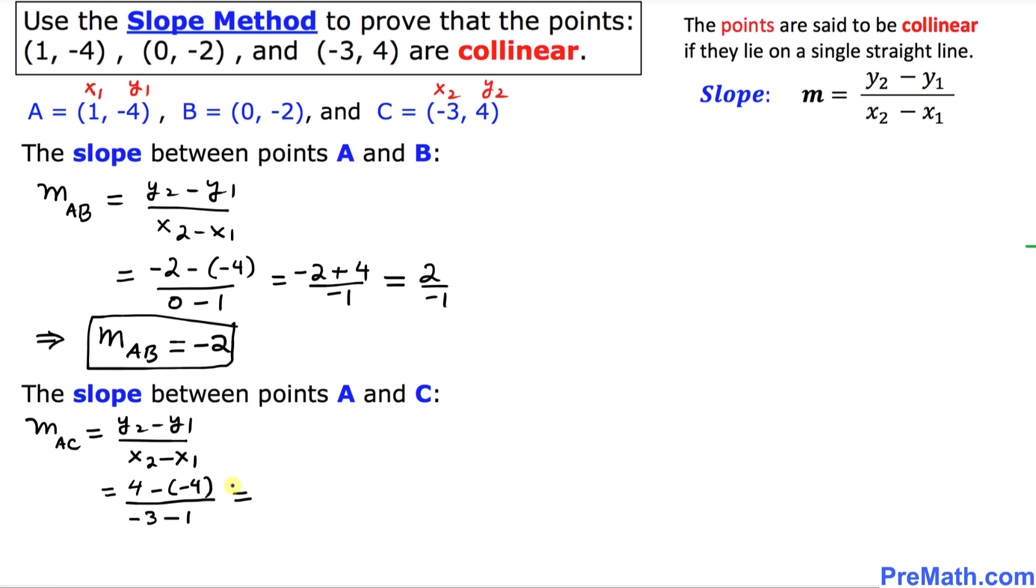Let's simplify this thing. That's going to become 4 plus 4 on the top divided by -4. So that is going to be 8 over -4. So thus, our slope between A and C turns out to be -2.